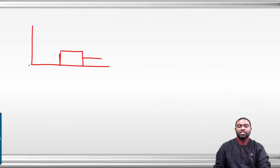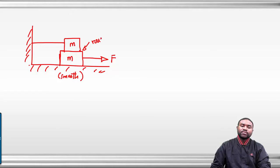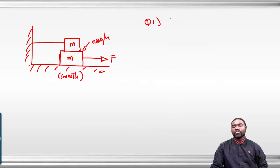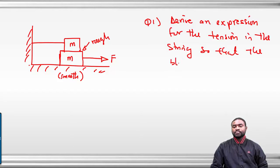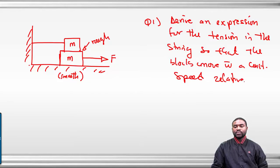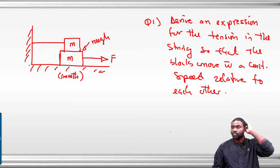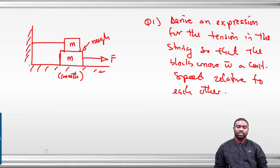Now let's look at the next example. We have a block being pulled by a force F. This block is of mass M, and we have another block on top of mass M attached by a string to that wall. This surface is smooth and this is rough. Question one: we need to derive an expression for the tension in the string so that the blocks move with a constant speed relative to each other. This is an interesting problem — we have to first analyze the forces in the system.